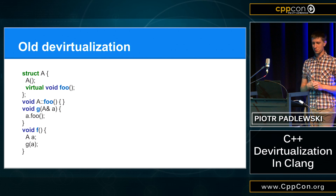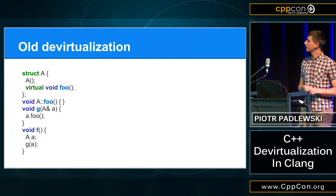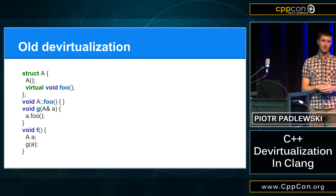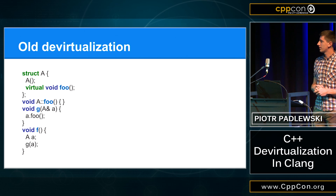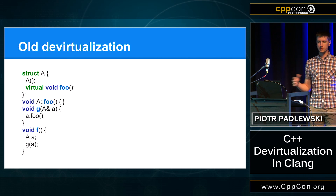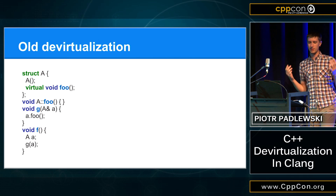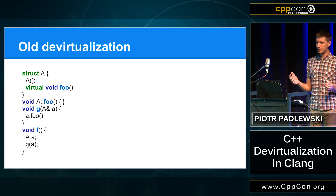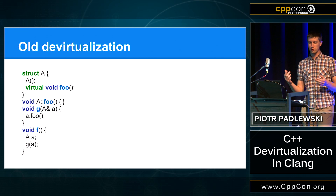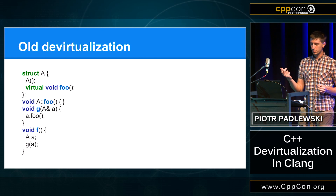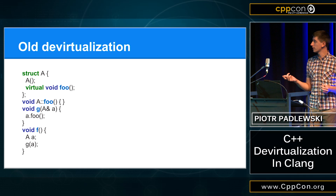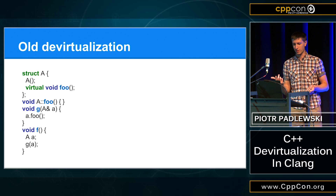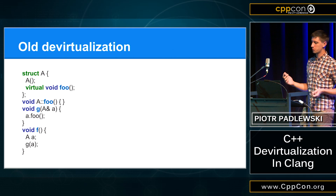So let's talk about what doesn't work in Clang right now. If we have an outline constructor, this will not be devirtualized. This is because all this optimization happens on the LLVM level, on LLVM IR. The thing is that we are loading here the V pointer. And because the constructor is outlined, the optimizer will not see the store to this V pointer, and because of it, it will not be able to devirtualize it.